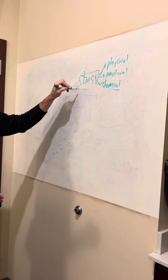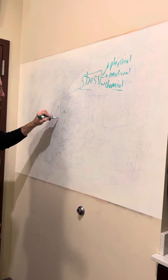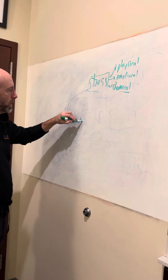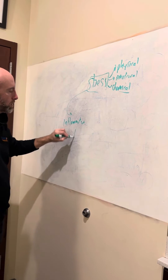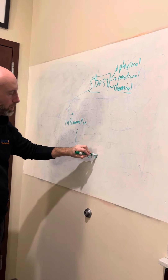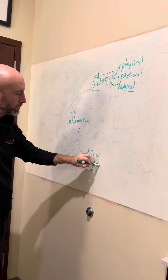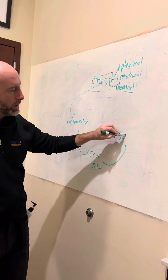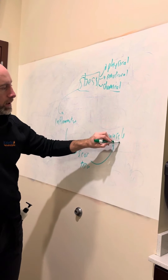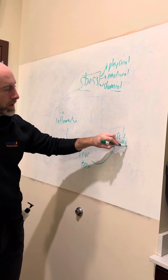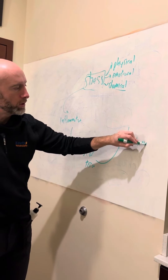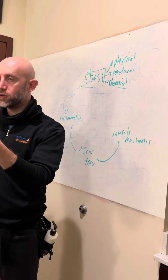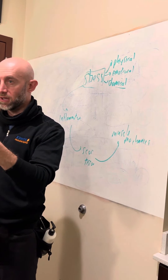Anytime we have a stressor, it creates inflammation, and then inflammation creates scar tissue. Scar tissue changes the muscle mechanics — how well muscles are moving. Muscles are supposed to glide like this, but if you have scar tissue, the muscle doesn't glide very well.